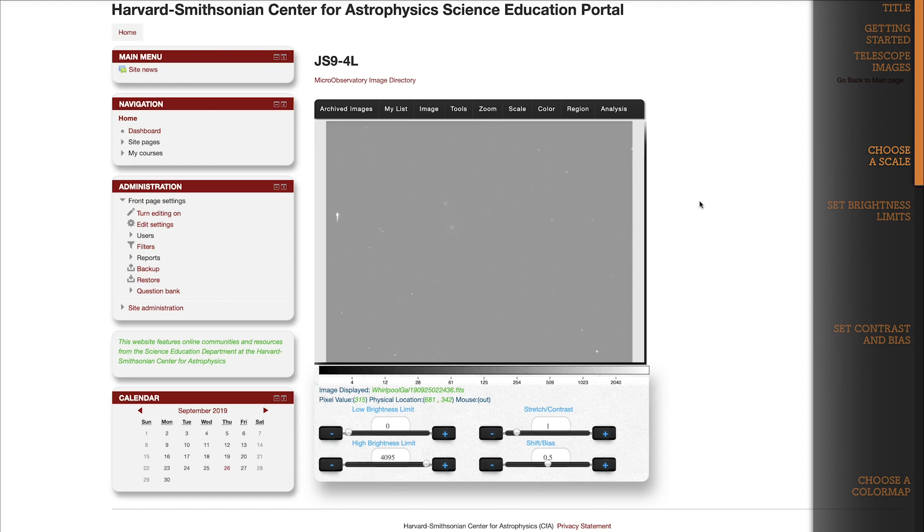JS9 always starts in linear scale, which works best for bright objects, like those in our solar system or star clusters in the Milky Way. If you want to use log scale, you'll have to select it yourself. Ultimately, it's up to you to decide which scale works best for your image.